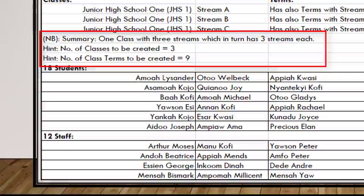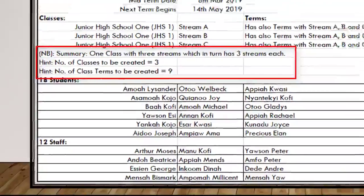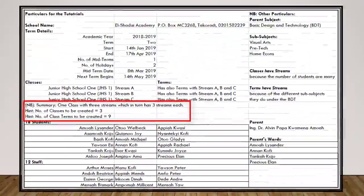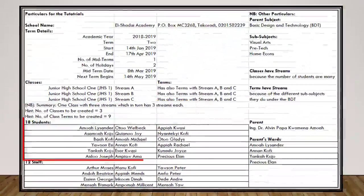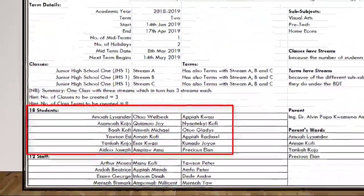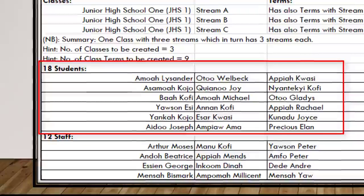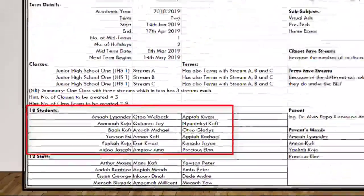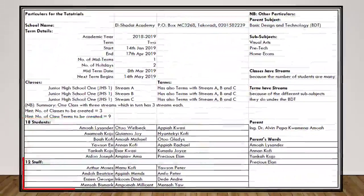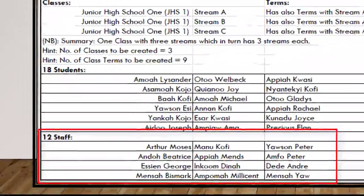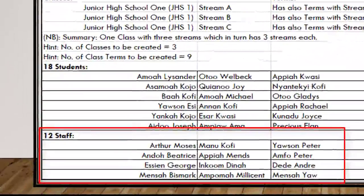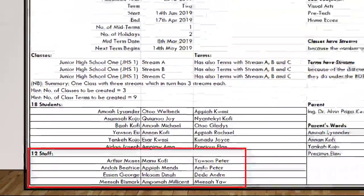Here is the hint: the number of classes to be created is three, the number of class terms to be created is nine. We also have 18 students — virtual names to go through the tutorials with — and 12 staff with virtual names to help in our tutorials.